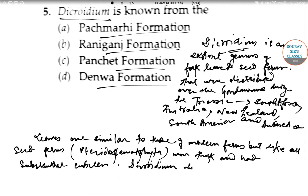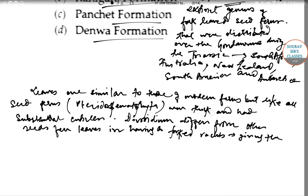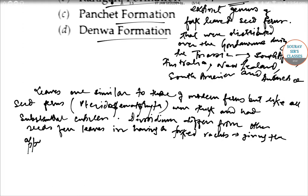And Decroidium differs from other seed fern leaves in having a forked rachis, giving the appearance of two frond leaves joined at the base.